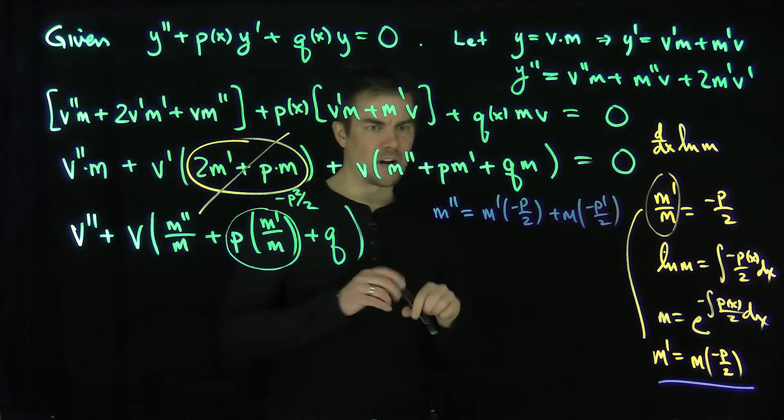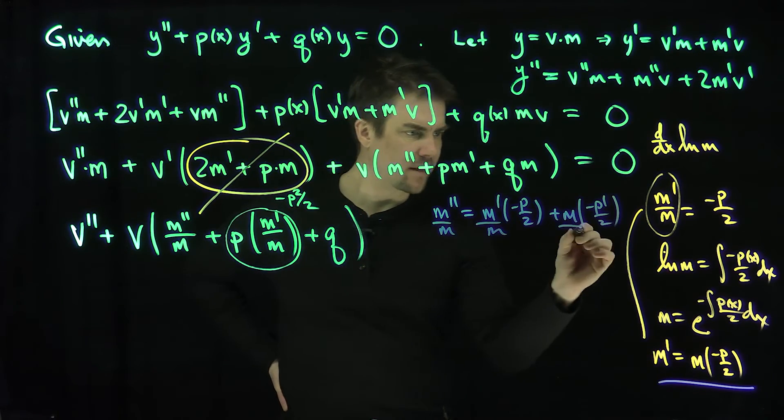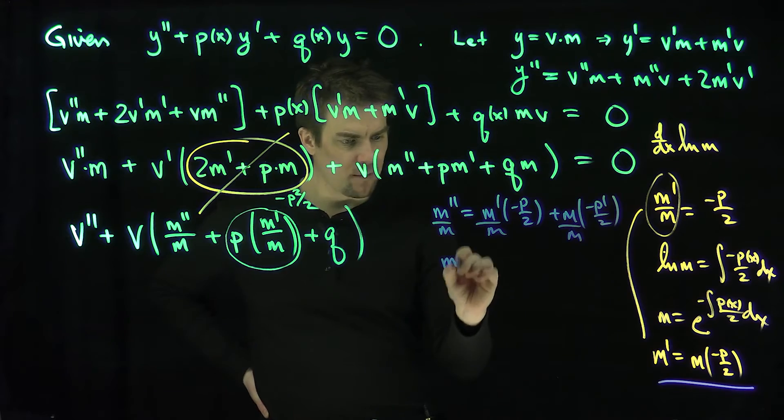So what is m double prime over m? If I divide this by m, divide this by m, and divide this by m, we see that m double prime over m is going to be equal to,